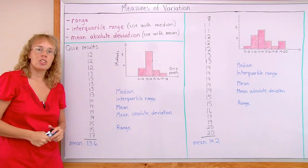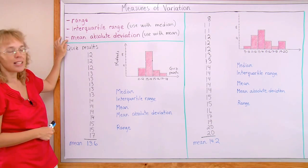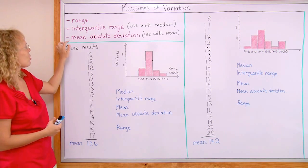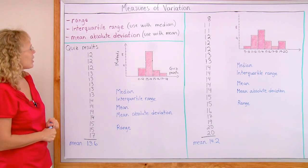And we're going to look at three such measures today. Range, interquartile range and mean absolute deviation, also called MAD for short.